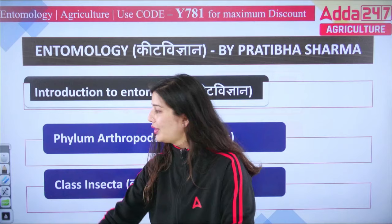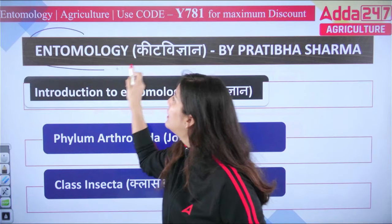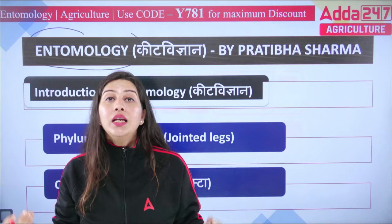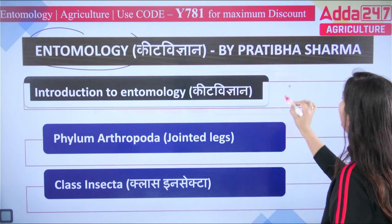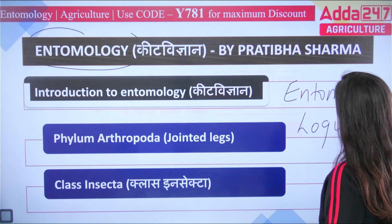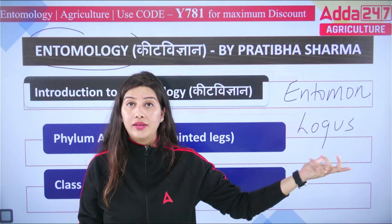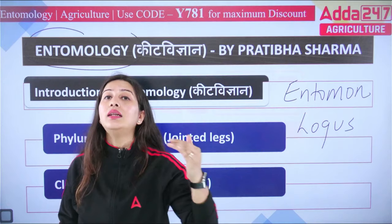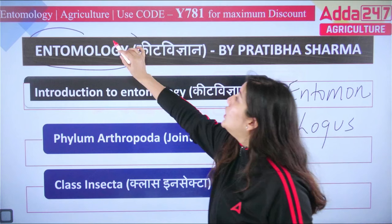Let's start with entomology. If we talk about the word 'entomology', it is a Greek language word — entomology is made from two Greek words: 'entomon' and 'logos'. Entomon means insect (keet), and logos means study. So the study of insects is known as entomology — Keet Vigyan.